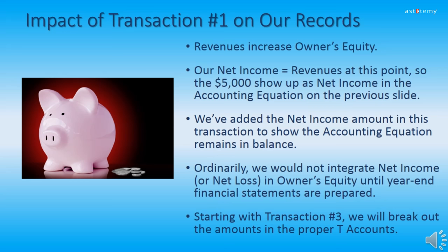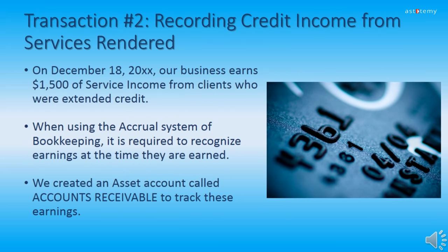Starting with Transaction 3, we will break out the amounts in the property account so you can see them. Now we're ready for Transaction 2, recording credit income from services rendered. On December 18, 20XX, Bookkeeping Clean and Simple earns $1,500 of service income from various clients who are extended credit. This is monies owed to our business, and when using the accrual system of bookkeeping, it is required to recognize earnings at the time they are earned. We have created an asset account called Accounts Receivable to track these earnings.